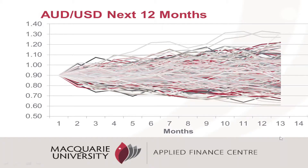Another consideration in many situations is that we have to think about correlations between markets. For example, a resources company might have to look at the correlation between the currency and the commodity price, or a fund manager might need to look at the correlation between two different equity markets.